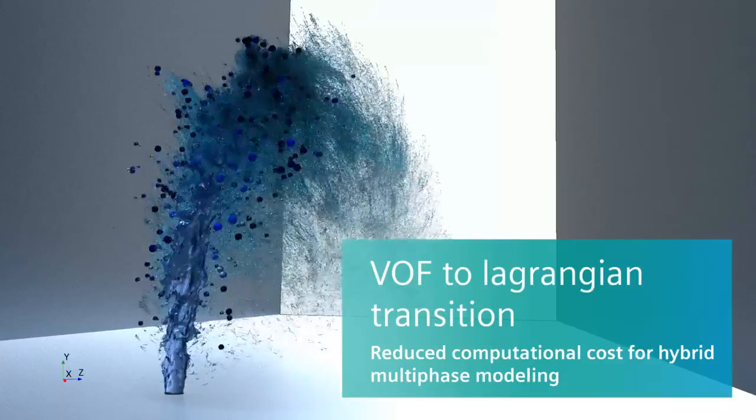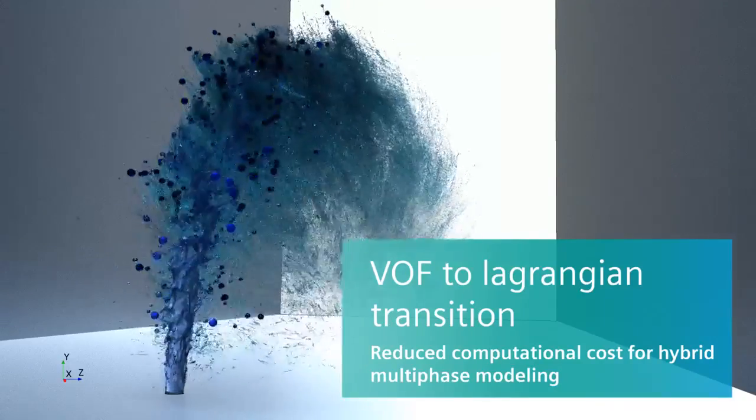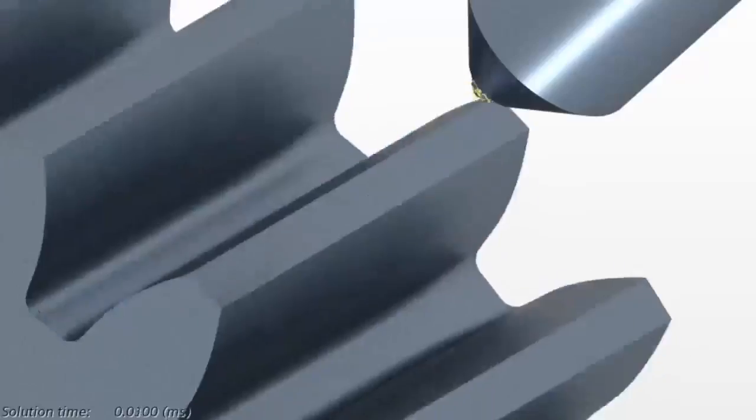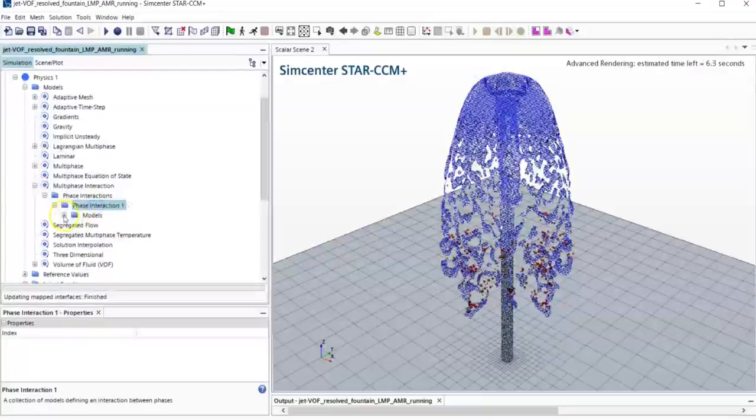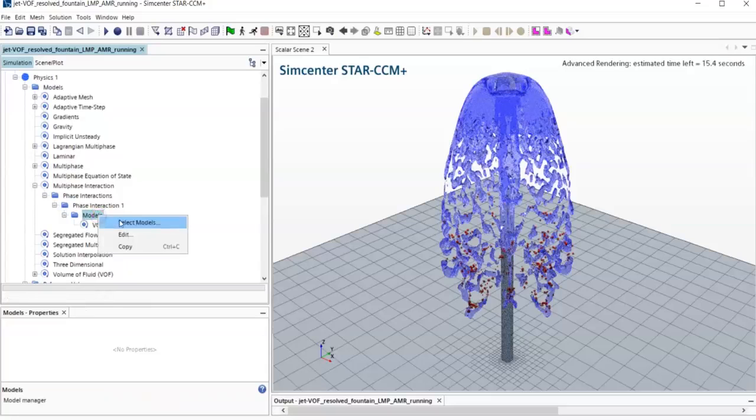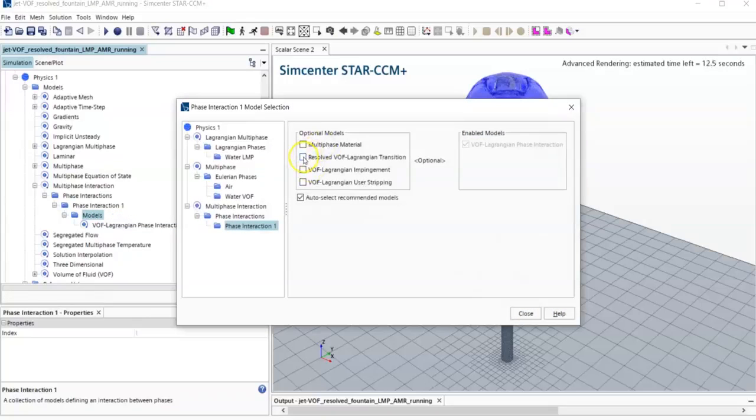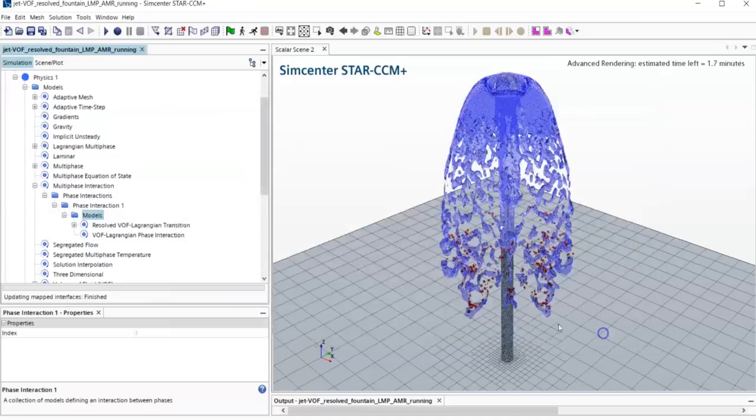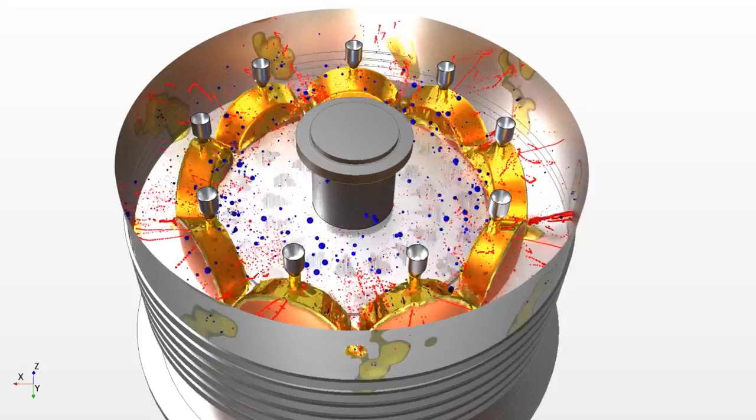We've introduced an exciting new hybrid multi-phase capability to more efficiently simulate liquid flows in applications where flow breakup is present, such as vehicle water management or spray cooling. The VOF to Lagrangian transition model resolves the formation of droplets using a volume of fluid approach. To track these droplets, the model automatically switches to a Lagrangian method, significantly reducing computational expense and simulation turnaround time.